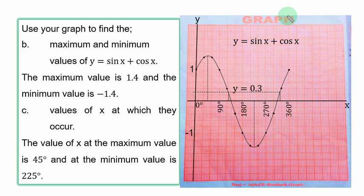Part B of the question is to find the maximum and minimum value. This is the maximum value of the curve, and this is the minimum value. So if you trace to the Y axis, you have 1.4 for the maximum value and minus 1.4 for the minimum value. When Y is 1.4, what is S? You trace it down to this point and you have 45 degrees. That is the corresponding value of S when Y is maximum. And when Y is minimum at this point, if you trace to the S axis, you have 225 degrees.